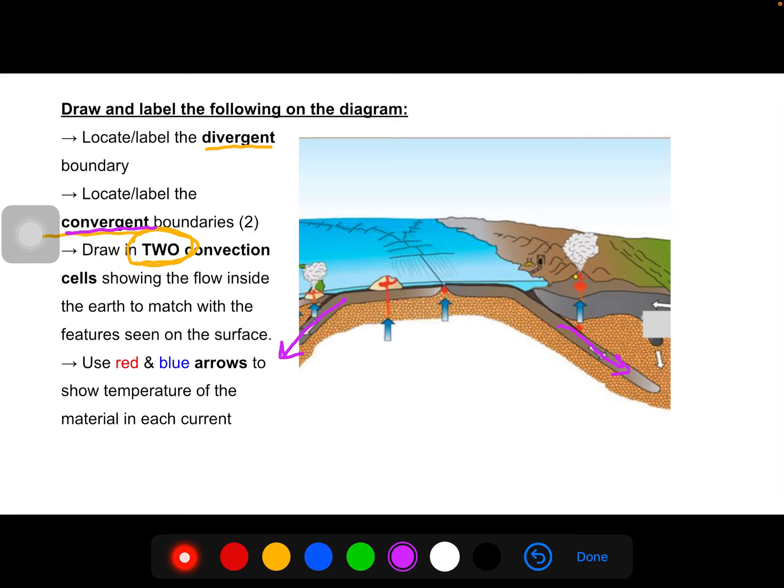In terms of the divergent boundary, that's going to be located here where we can see the magma coming up and the plates then, if we look at the arrows. Here we have one indicating this piece of crust is moving this way, so that would still be this direction. And again, same thing. And so here we can see another arrow where the crust is moving these two together.